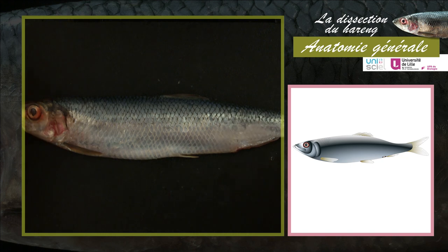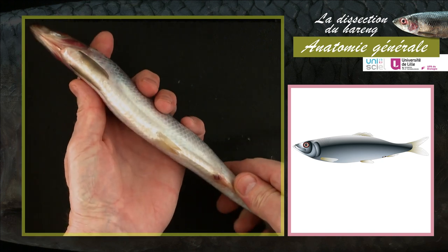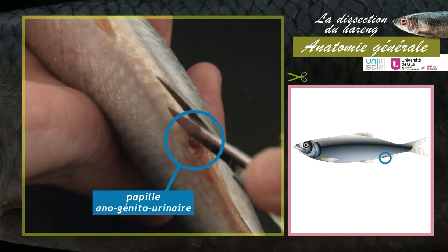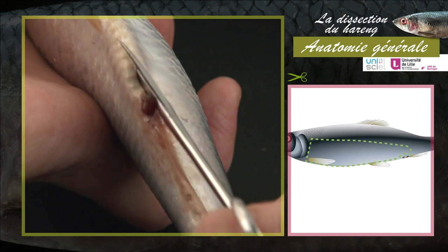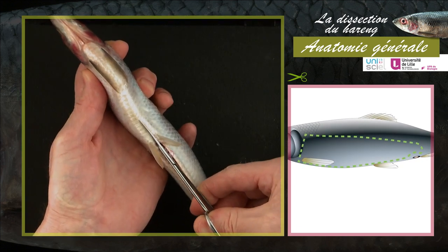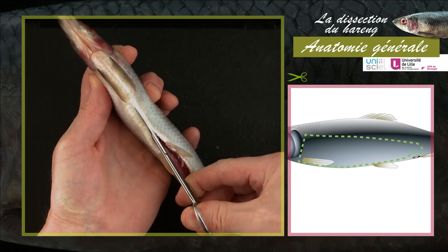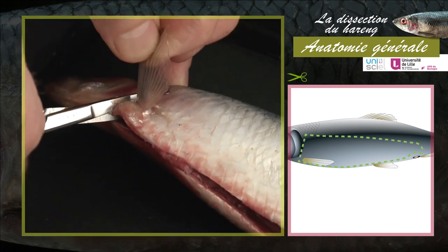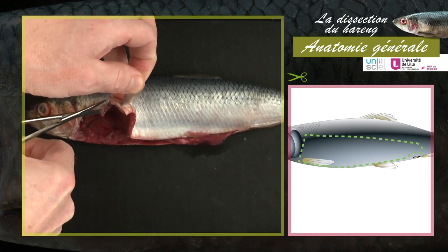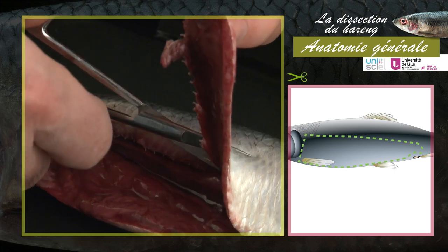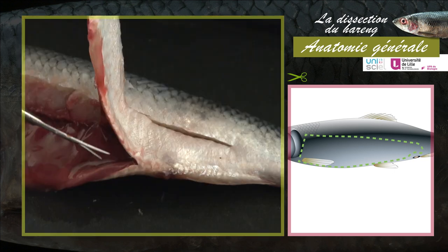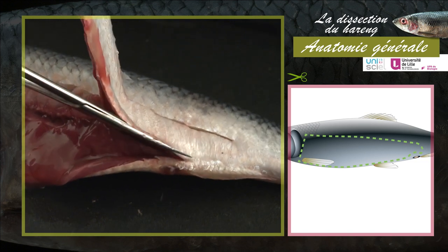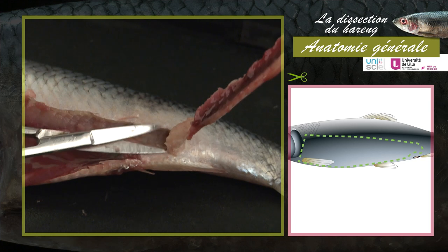Pour observer l'organisation interne du hareng, il faut ouvrir la cavité abdominale à l'aide de ciseaux. Il faut pratiquer une incision en avant de la papille anogénitourinaire. À partir de cette ouverture, continuez l'incision de la peau et des muscles sur le plan médioventral jusqu'à la base de l'opercule. Ensuite, remontez sur le flanc gauche vers le dos et continuez l'incision sur le plan médio-latéral en direction de la queue, jusqu'au niveau de la nageoire anale. Contournez la papille anogénitourinaire et enlevez complètement le volet des muscles.